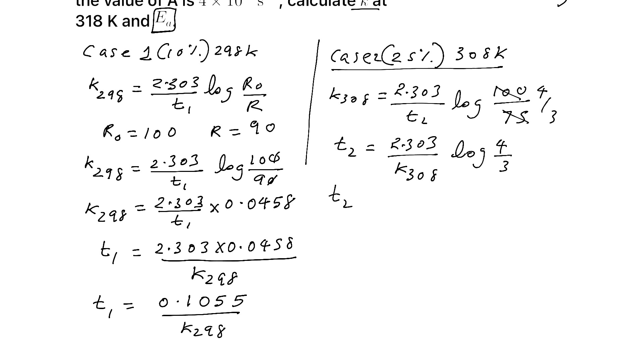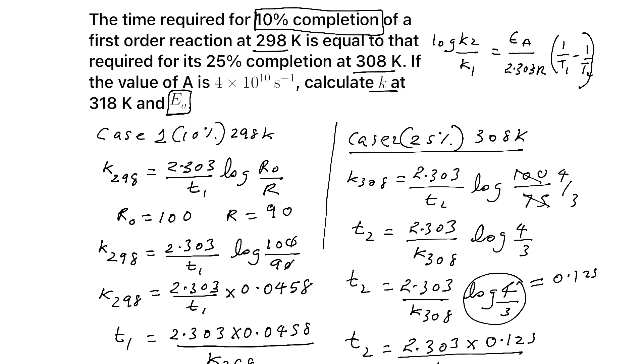So t2 is equal to 2.303 by k308 at 308, log 4 by 3 is what? On calculating, log 4 by 3 on calculating you will get 0.125. That we can do in the next step. t2 is equal to 2.303 × log 4 by 3, you will get 0.125 by k308. So what is t2? On calculating that, you will be getting 0.2879 by k at 308 Kelvin. So we find t1 and t2. Now check.